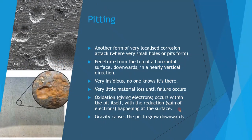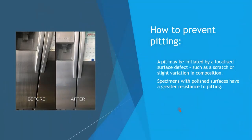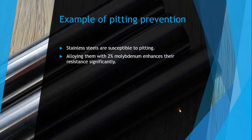Pitting is another very localized form of corrosion where small pits form and penetrate from the top of a horizontal surface downwards in a nearly vertical direction. They are very insidious — difficult to detect — and there is very little material loss until failure occurs. Oxidation occurs within the pit itself, with reduction happening at the surface, and gravity is thought to drive the pit downward. Pitting may be initiated by localized surface defects such as scratches. Polished surfaces have greater resistance but are expensive to produce.